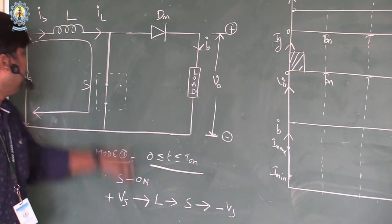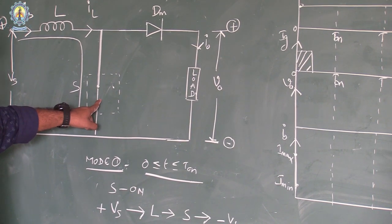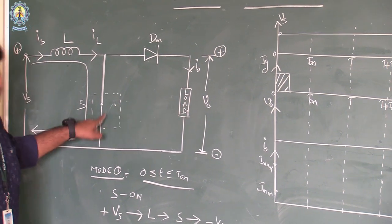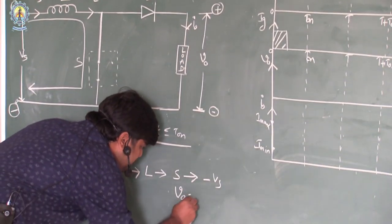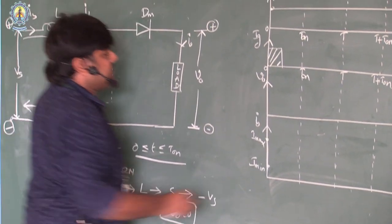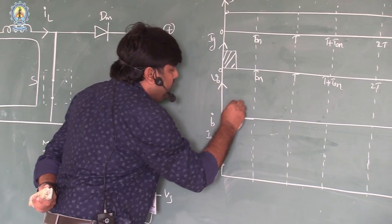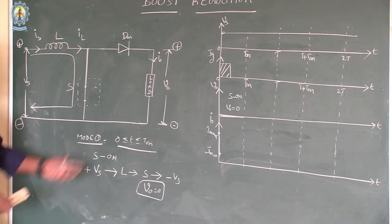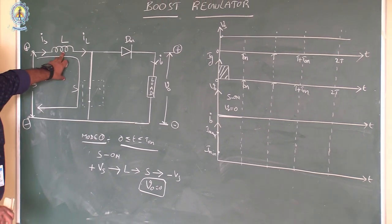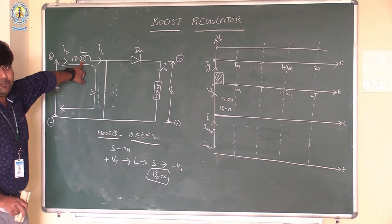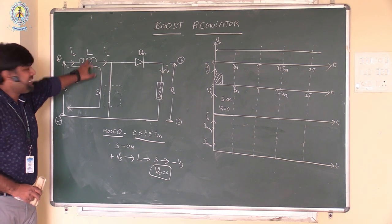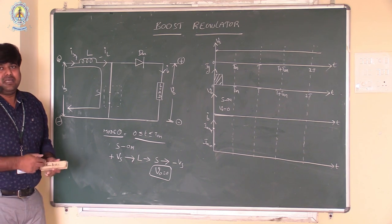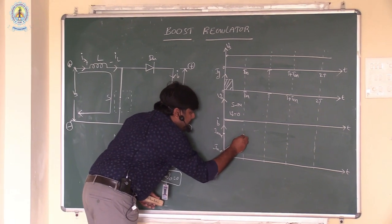When the switch is on and acts as a closed switch, the output voltage measured across the load is zero, because the load is shorted by the switch. So V0 equals zero during this period. The current depends on the inductance; according to the magnetic property, when the inductance starts charging it assumes polarity plus-minus, and the inductor current increases from minimum to maximum.